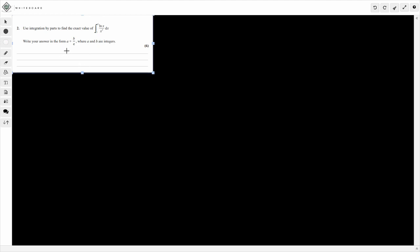We have to write the answer in the form a plus b over e, where a and b are integers. Let's take this step by step. We're asked to do it by parts, but we have this expression here where it's a quotient. So we need to get it in some form of a product. Let's rewrite this.